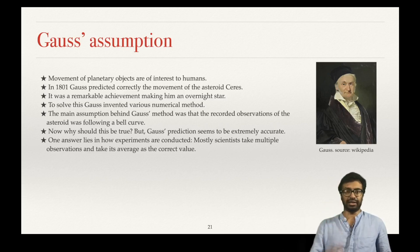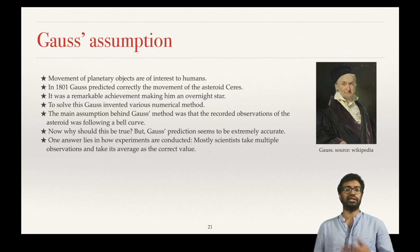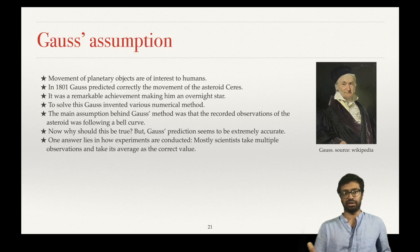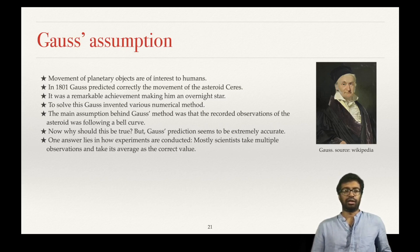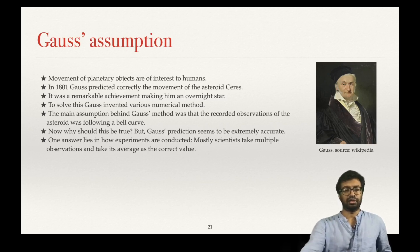People wondered: why should this be true — why should recorded observations of the asteroid follow a bell curve? One answer lies in how scientists conduct experiments. Scientists take multiple observations and take their average, which is then noted down as the valid observation. You do this because you do not want a single observation to be an error — so you take multiple observations and average them.